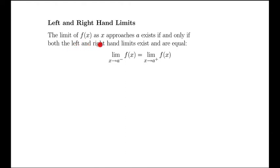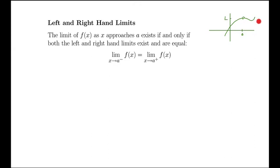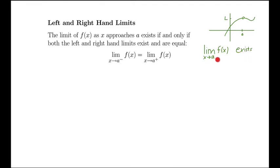The limit of f of x as x approaches a exists if and only if both the left and right-hand limits exist and are equal. If that's the case, the picture looks like that. As x approaches a from the left and x approaches a from the right, we end up with the same thing. The limit as x approaches a of f of x exists because it's the same thing from both sides.